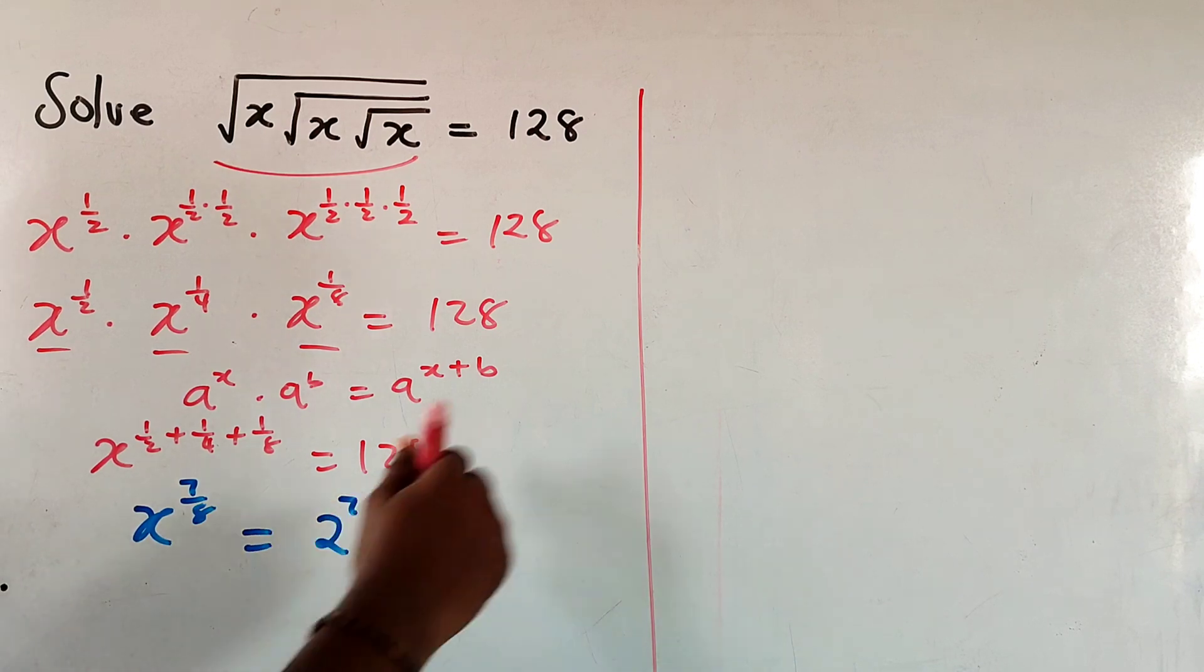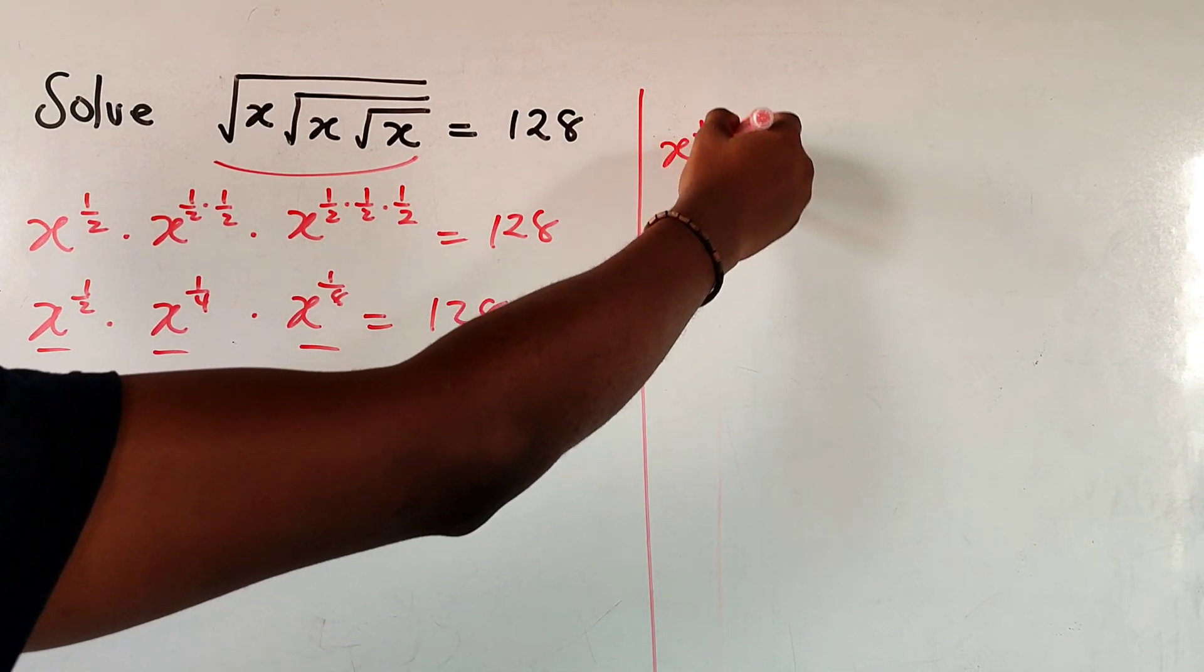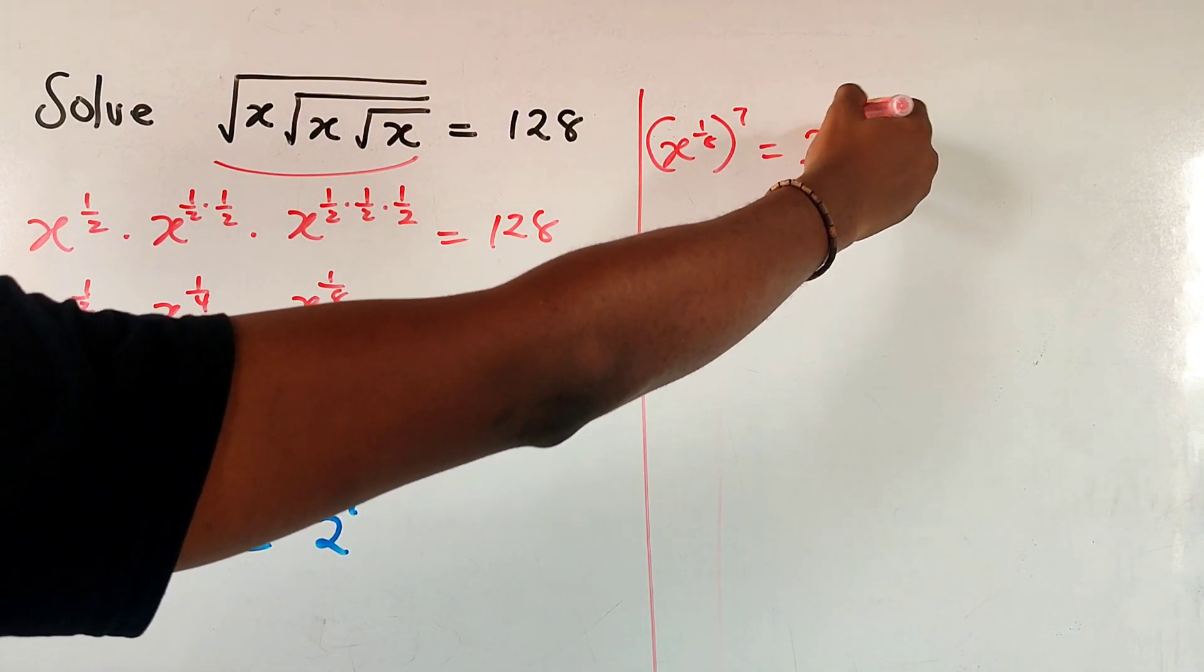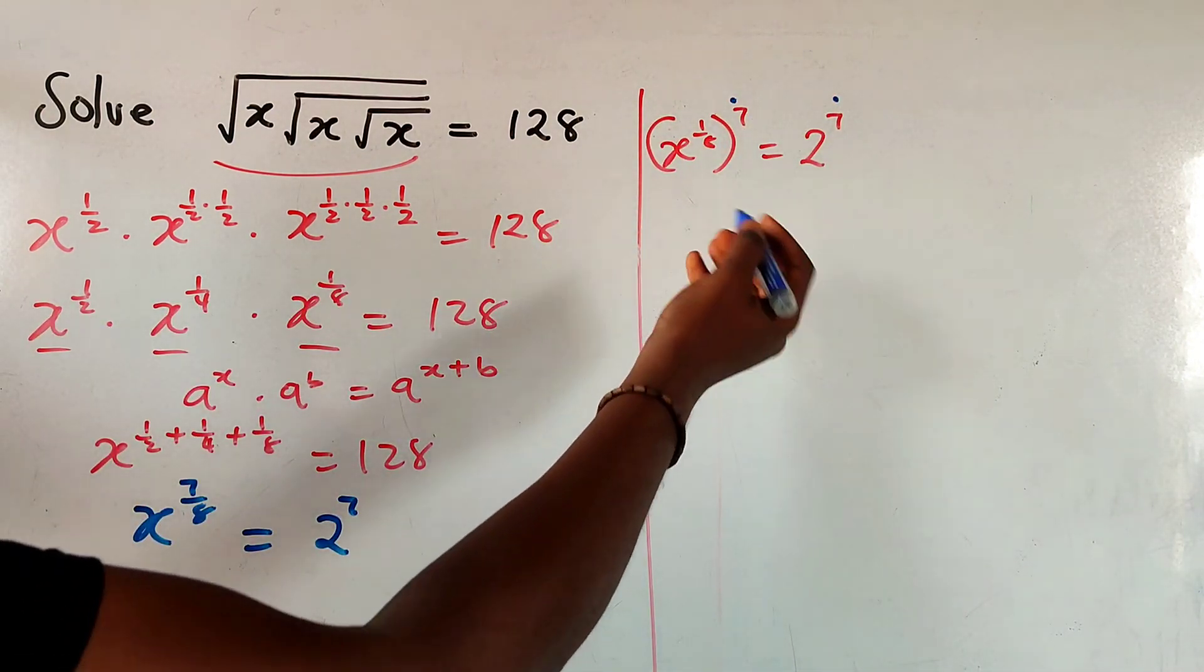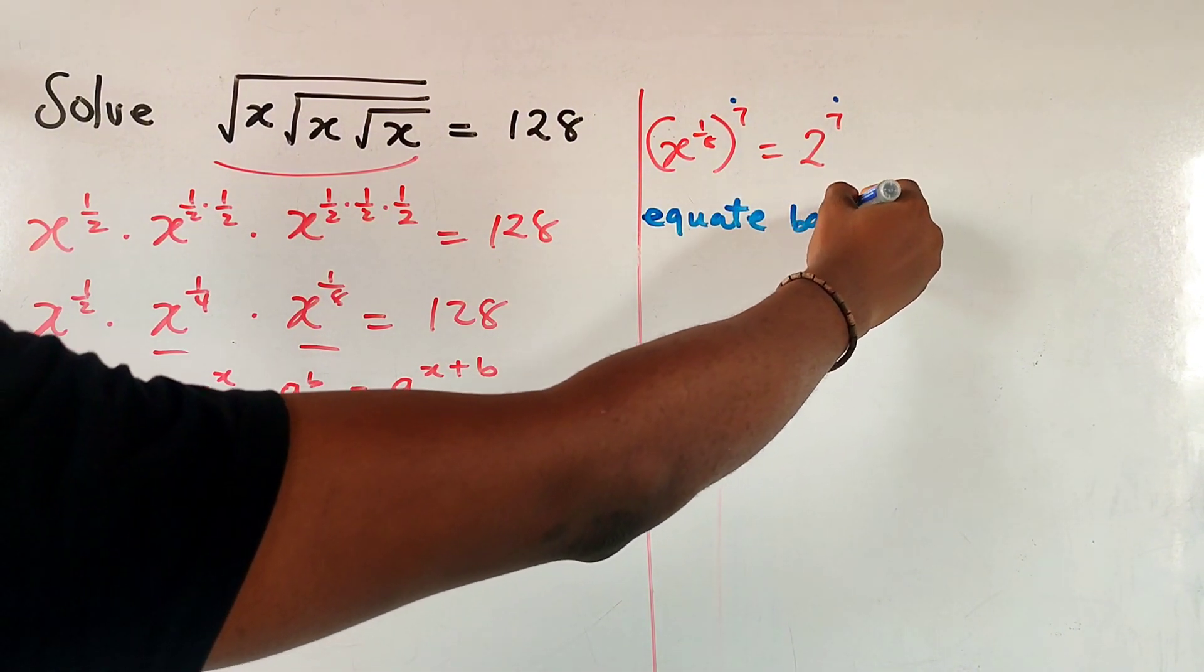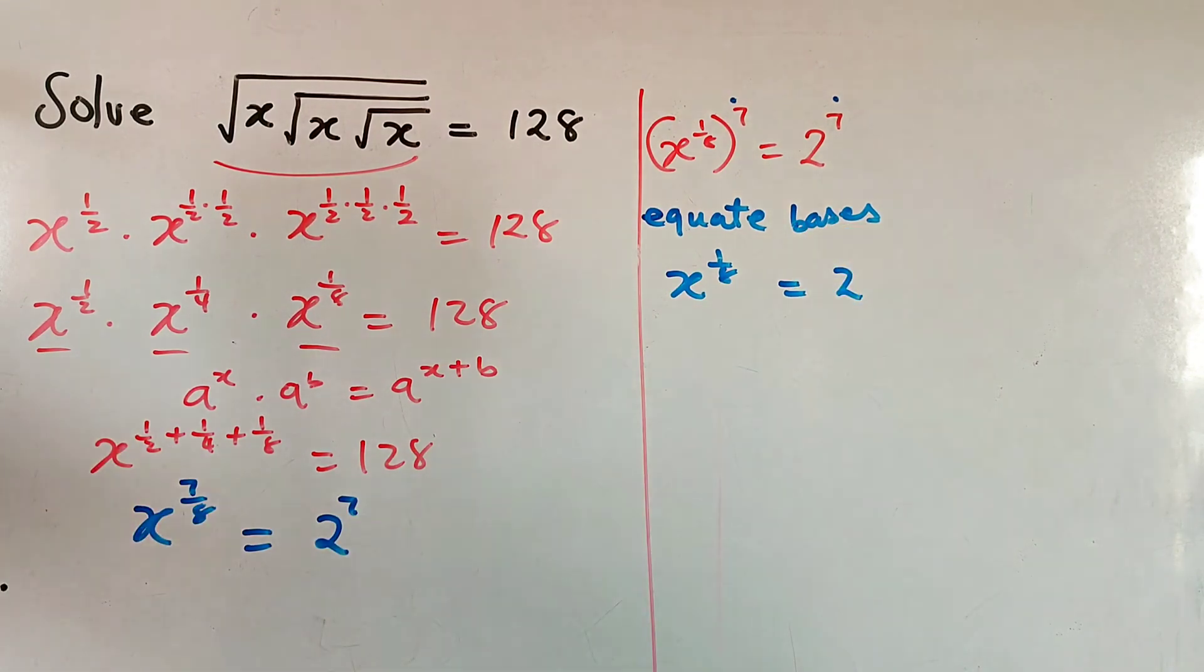Now I could break this down into x to the 1 over 8 to the power of 7 and 2 to the power of 7. So we can see that the exponents are the same, 7 and 7. So I could get rid of the exponents or I could equate bases. That means x to the power of 1 over 8 will be equal to 2.